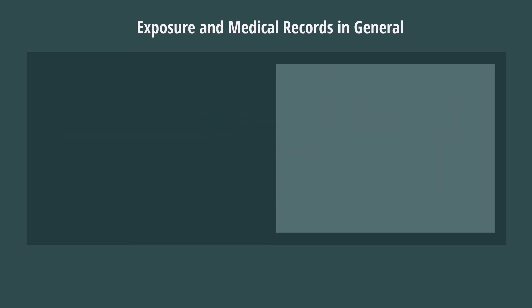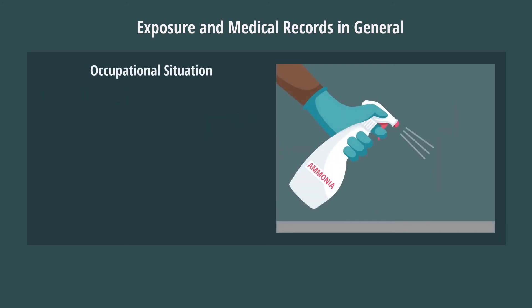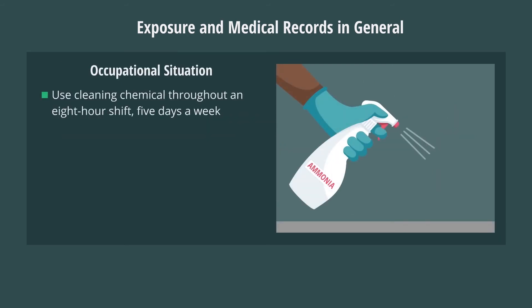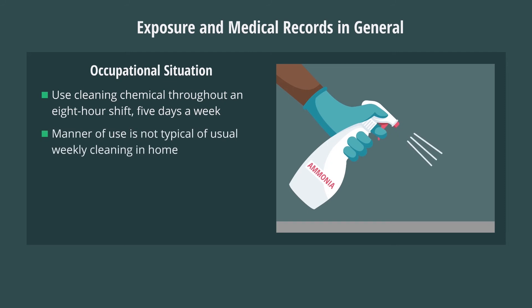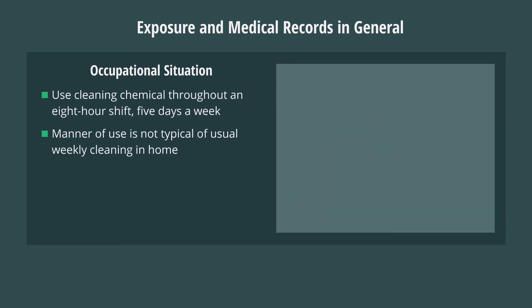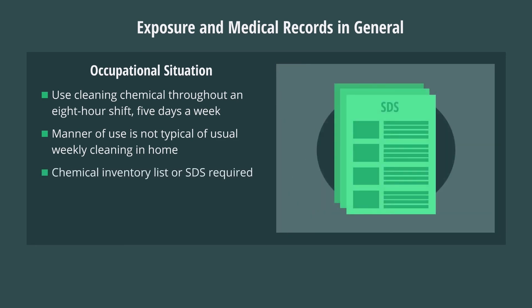A reverse example is when a sanitation employee is required to use a cleaning chemical, such as ammonia or bleach, throughout an eight-hour shift five days of the week. This manner of use is not typical of the usual weekly cleaning done by a homemaker in the typical home, and records such as a chemical inventory list or an SDS would be required.